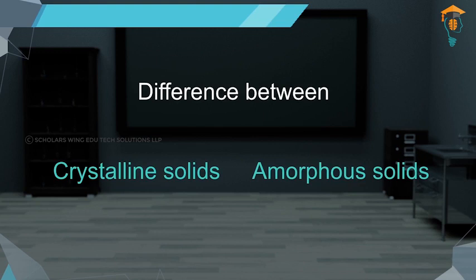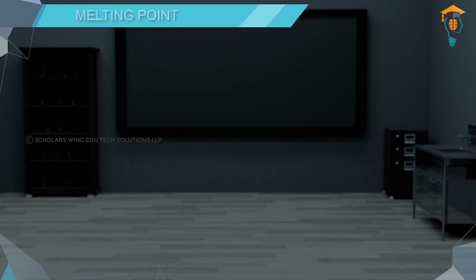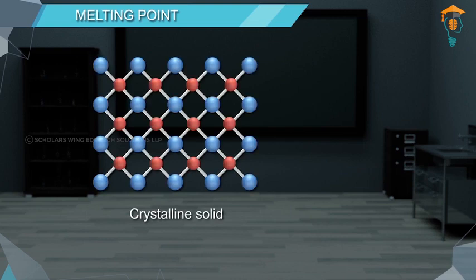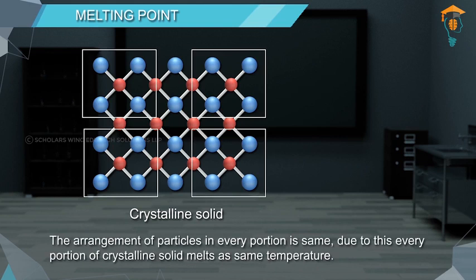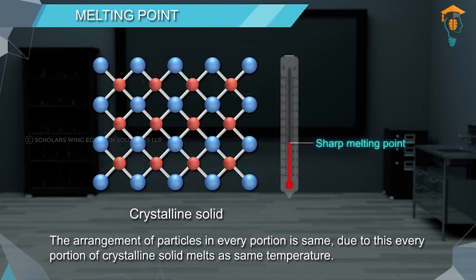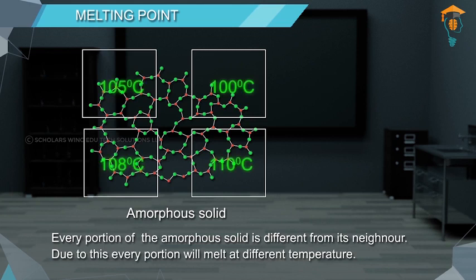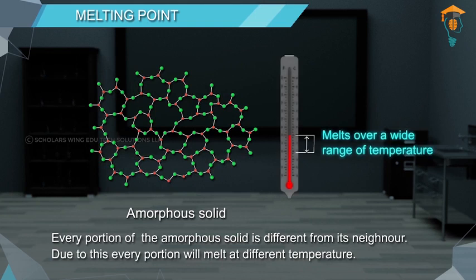The first difference between crystalline and amorphous solids is melting point. In a crystalline solid, the arrangement of particles in every portion is the same, so every portion melts at the same temperature — therefore crystalline solids have a sharp melting point. In amorphous solids, every portion is different from its neighbor, so each portion melts at a different temperature, meaning amorphous solids melt over a wide range of temperature.